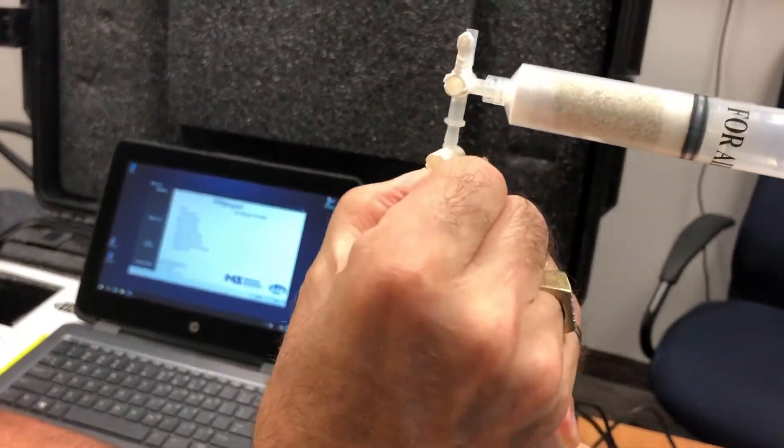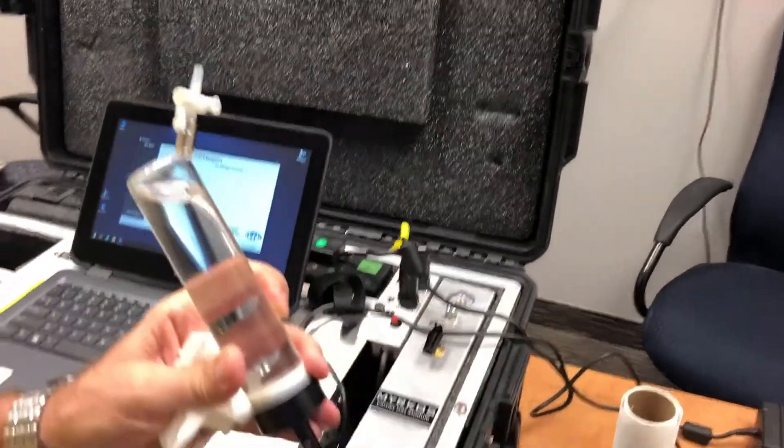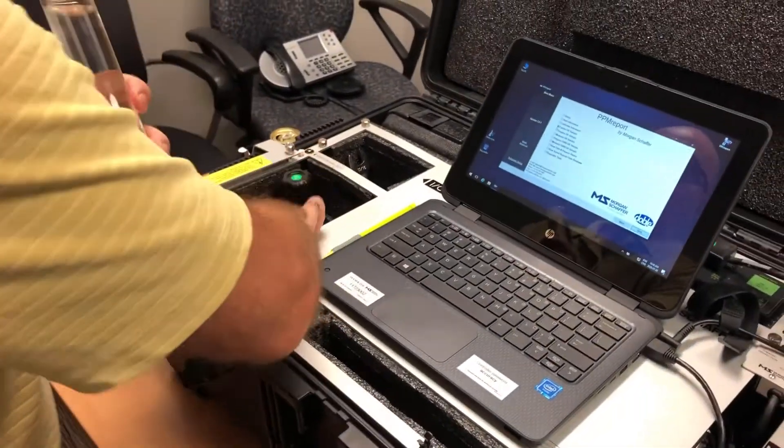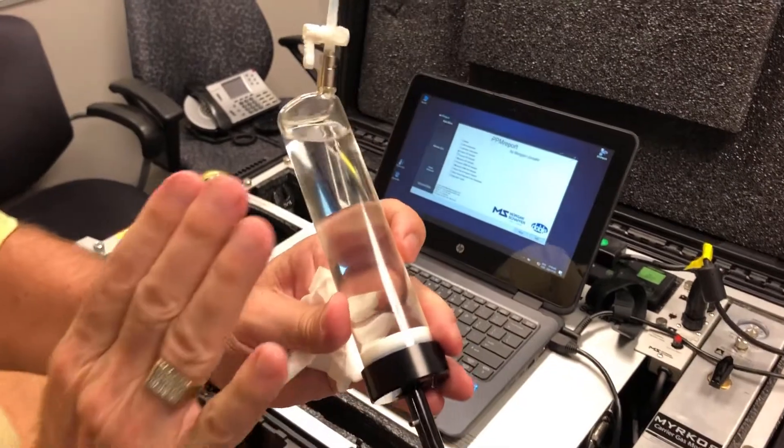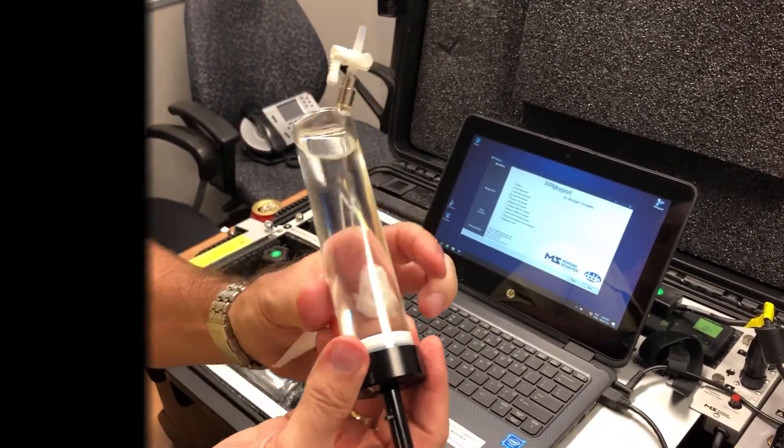Then you close this valve, you close this valve, and you remove the syringe and put back the cap to make sure there's no contamination. So this is your sample that we're going to use now to analyze the oil.